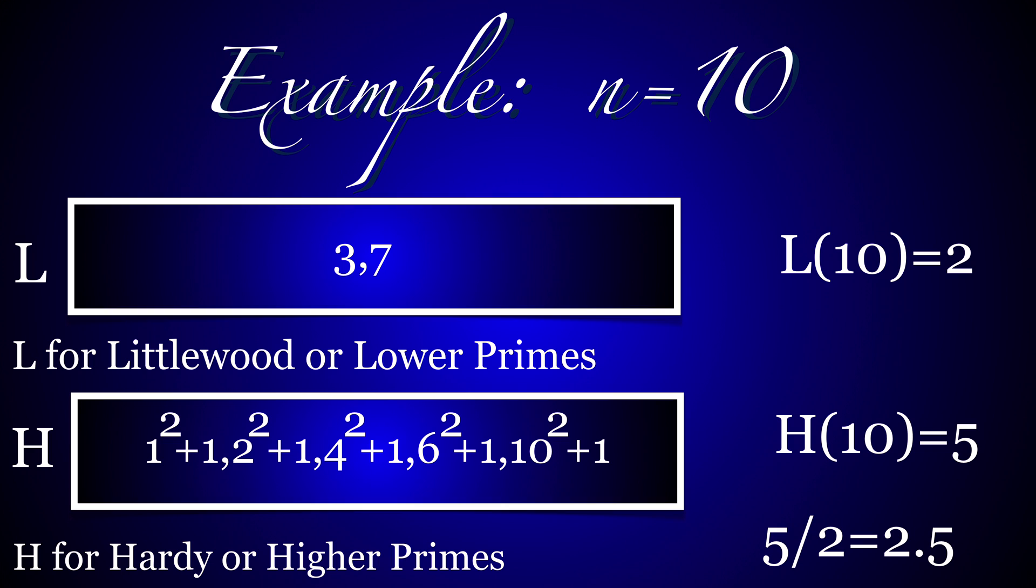Let's experiment. For n=10, there are two L primes of the form 4k+3 which are smaller or equal than 10. We have L10=2. Then there are five integers k=1, 2, 4, 6, and 10 smaller or equal than 10 for which k²+1 is prime.